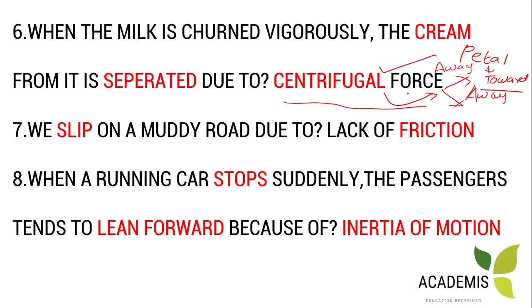Another example of centrifugal force is the spin dryer of a washing machine — especially a fully automatic washing machine. During the spin cycle, the centrifugal force pushes water outward, drying the clothes. Damp clothes placed in the spin dryer have water removed due to centrifugal force acting outward during spinning.